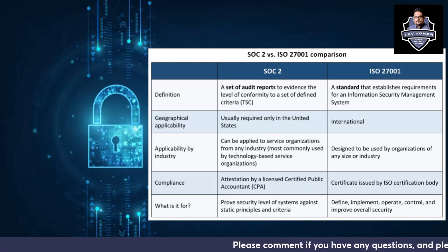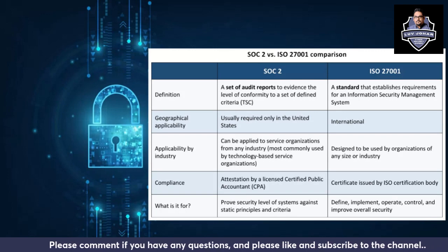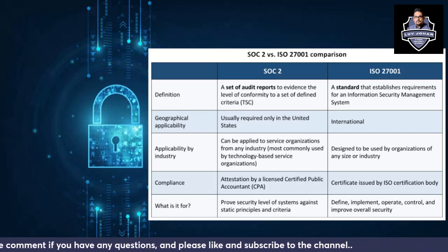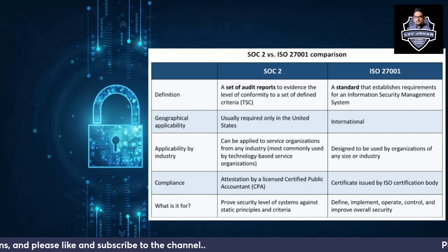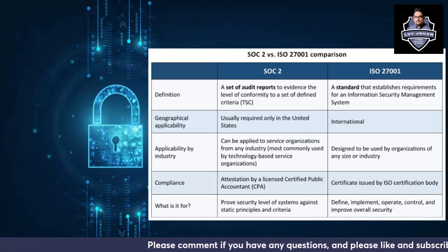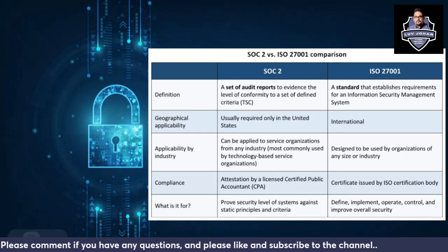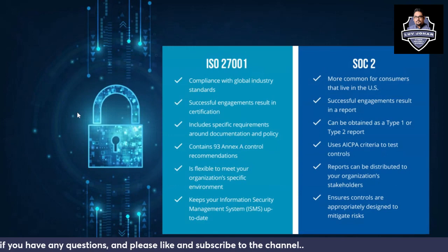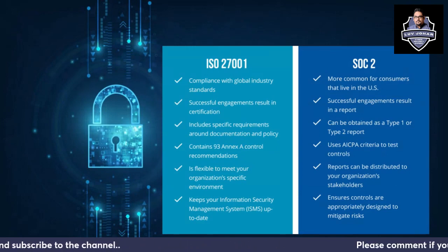For compliance, an ISO certificate is issued by an ISO certification body. For SOC 2, there has to be an attestation by a licensed Certified Public Accountant (CPA). ISO 27001 is about defining, implementing, operating, controlling, and improving the overall security of an organization. SOC 2 ensures the security level of systems against Trust Services Principles and criteria.